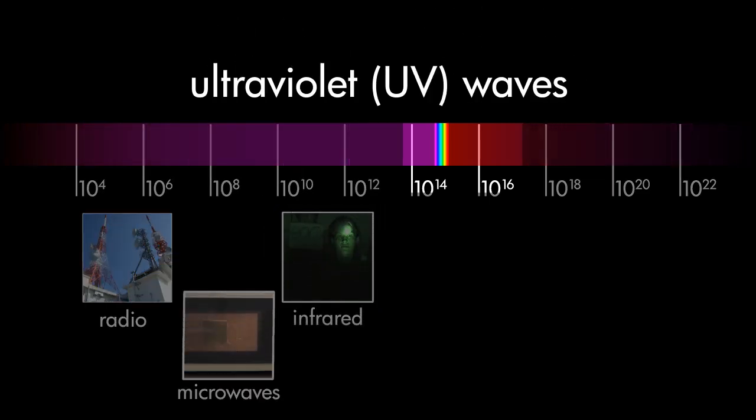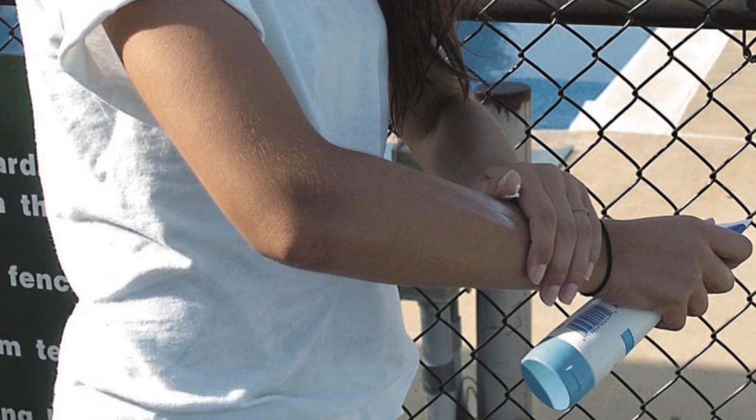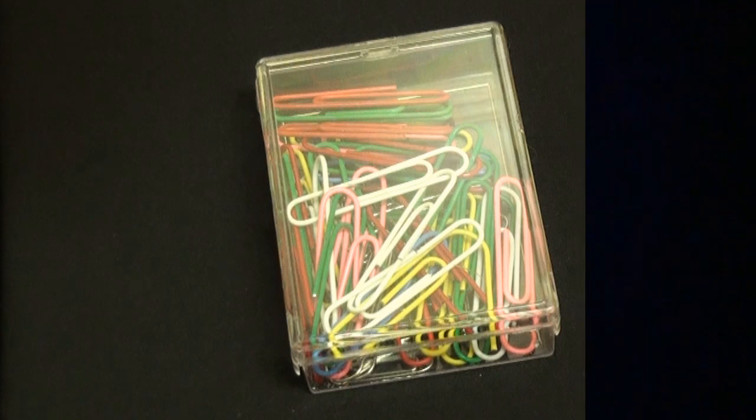Ultraviolet, or UV waves, are found in sunlight, although almost all of it is blocked by the Earth's atmosphere. You're probably familiar with the effects of UV through sunburn and how black lights cause objects to fluoresce.